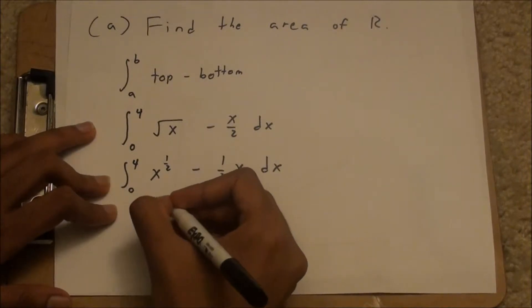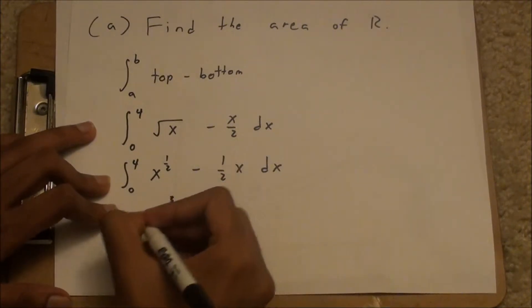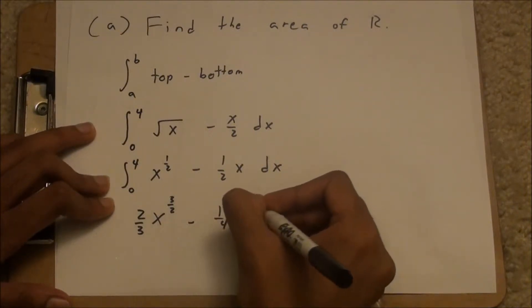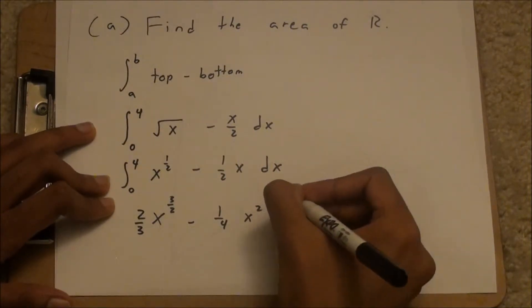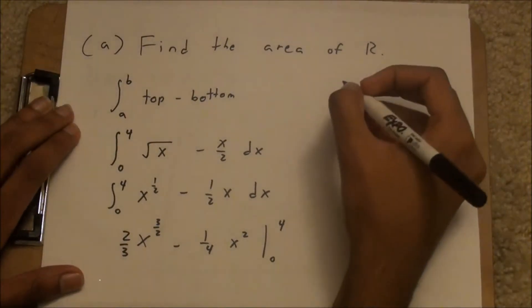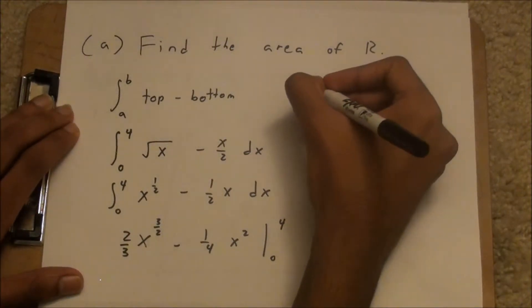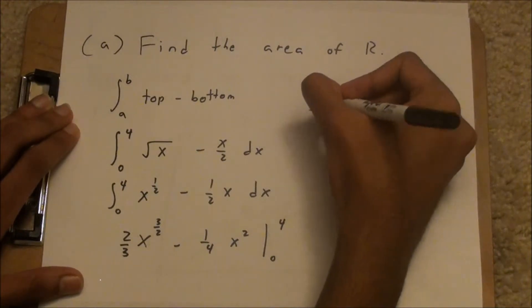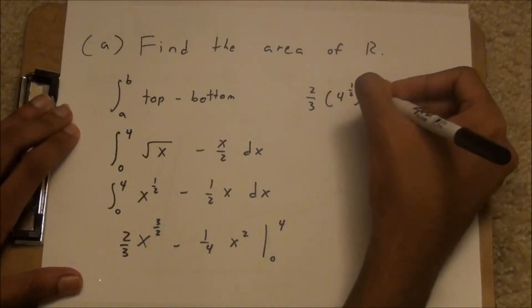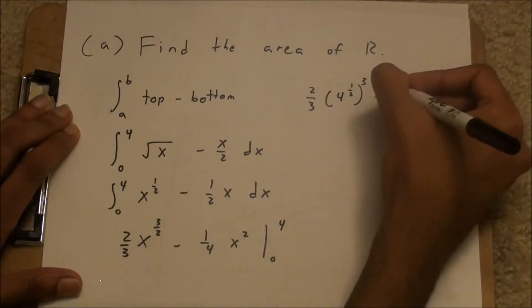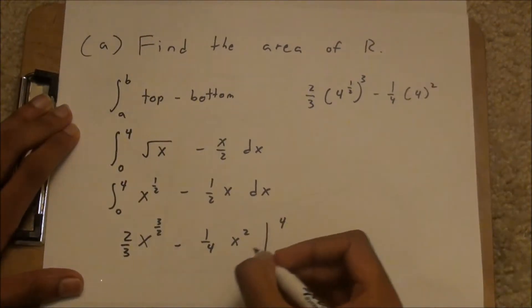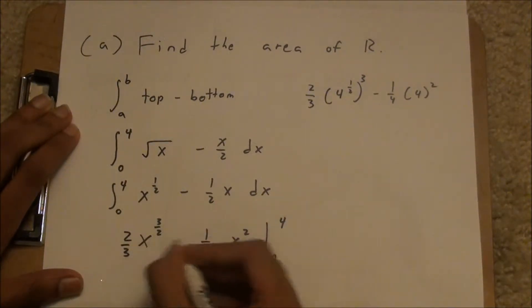And if you did that, you would get x to the 3 halves, 2 thirds of that, minus 1 fourth x squared from 0 to 4. To put your limits of integration in, you would get 2 thirds 4 to the 1 half power to the third power minus 1 fourth x squared. And this is just 0 minus 0, so I won't write that.